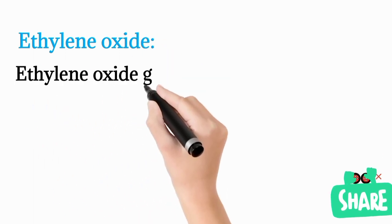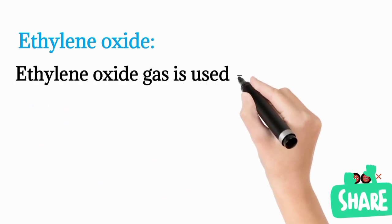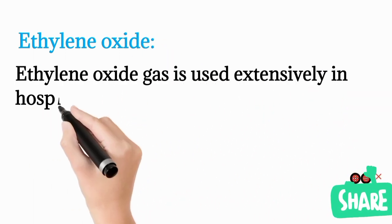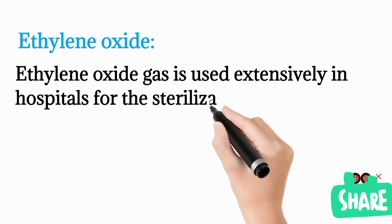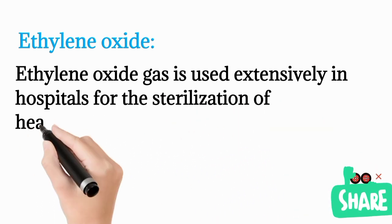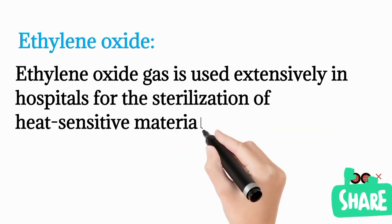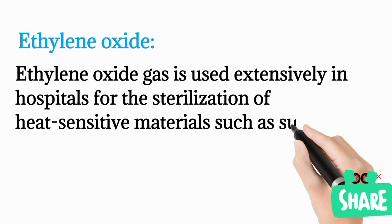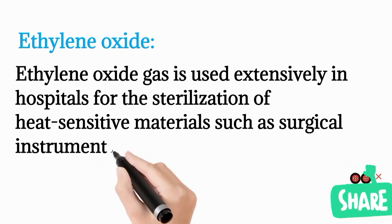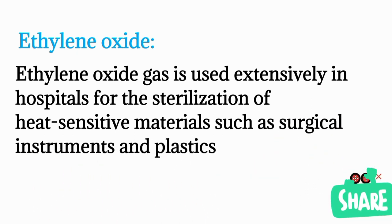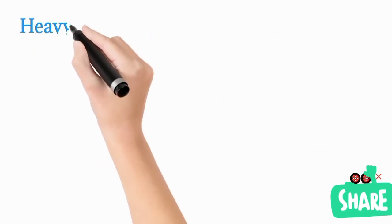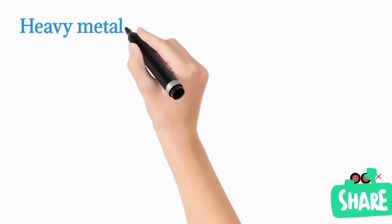Glutaraldehyde is used to sterilize respiratory therapy equipment, endoscopes, and hemodialysis equipment. Ethylene oxide is a gas used extensively in hospitals for the sterilization of heat-sensitive materials, including some surgical instruments and plastics like syringes.